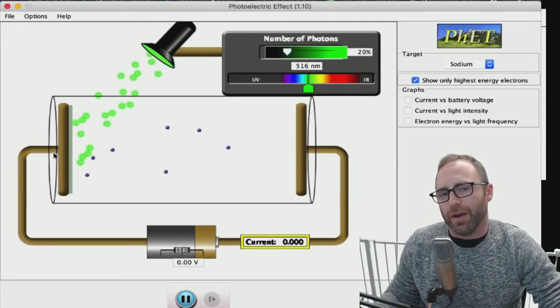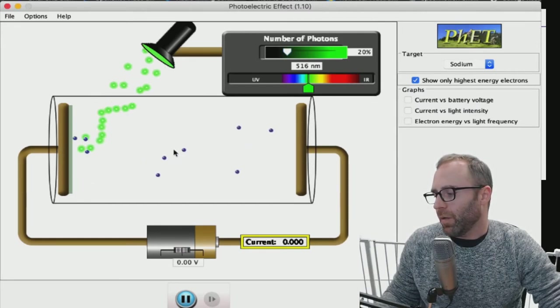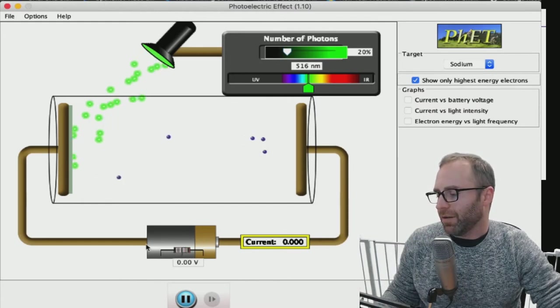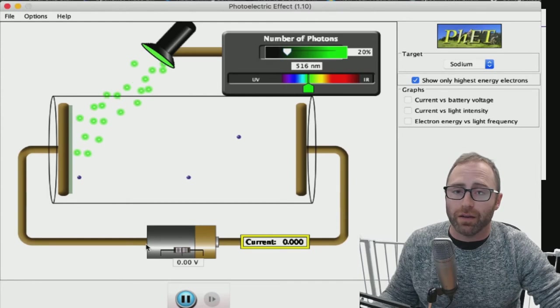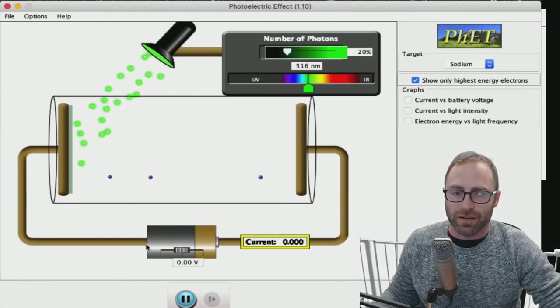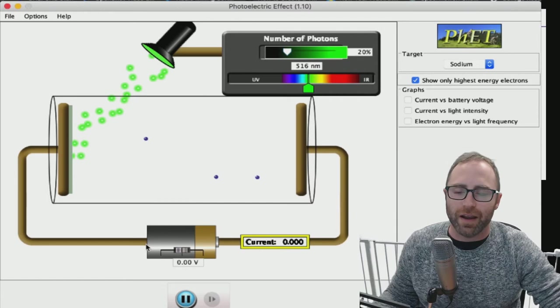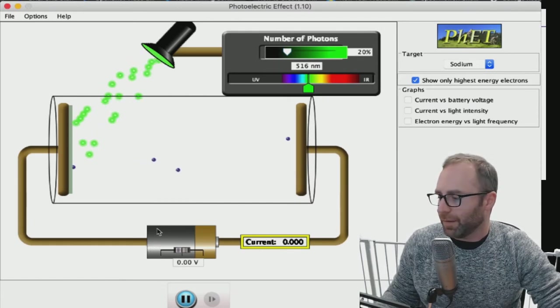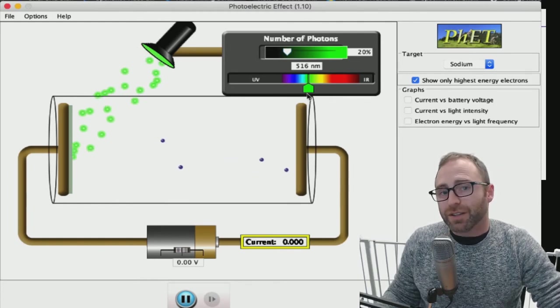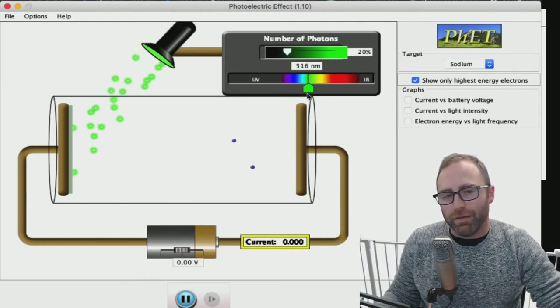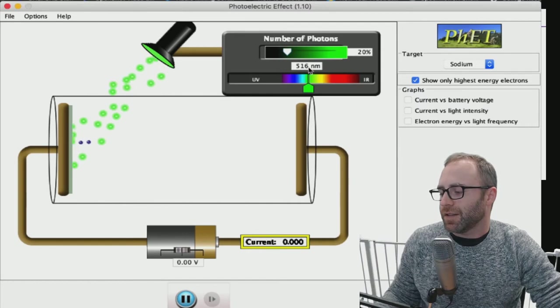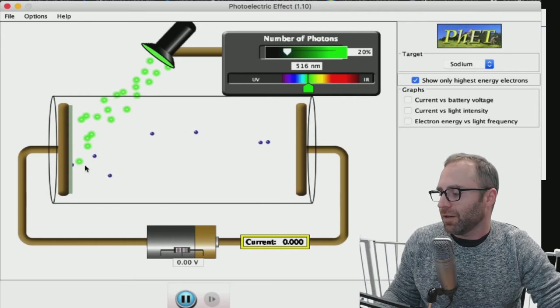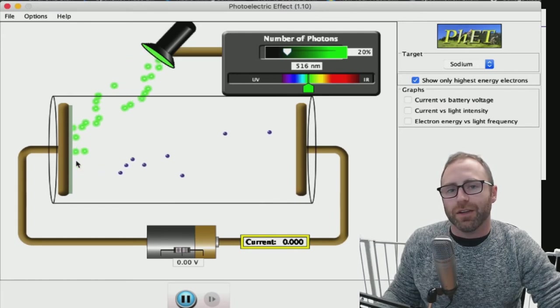You could imagine a situation where you have something like this set up and instead of having a battery in here you could have something that does some kind that needs electricity that needs the flow of electrons in order for it to work like a fan or something of that nature. We don't have that set up for this demonstration. So approximately green wavelengths of light, this 516 nanometers wavelength of light, was of high enough energy that it started to cause the electrons to be kicked off of the surface.